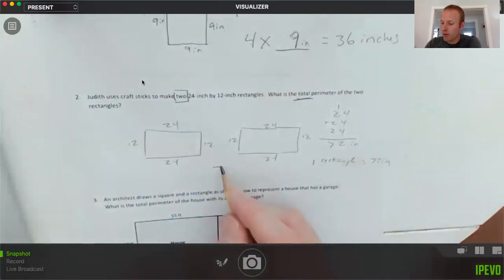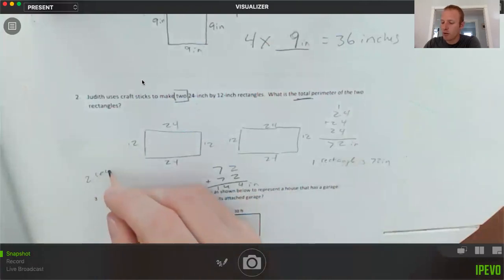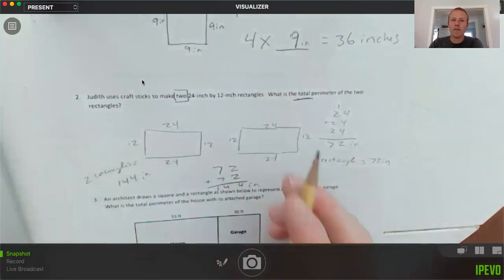I looked at the camera halfway through spelling the word and forgot where I was. One rectangle is 72 inches. So two rectangles, then 72 plus 72 is 144 inches. Two rectangles equals 144 inches. So again, the math in that, the addition here, not terribly complicated. The hardest part of this problem is understanding there are two rectangles and you're finding the total perimeter, not the area, that you're adding the two perimeters together.